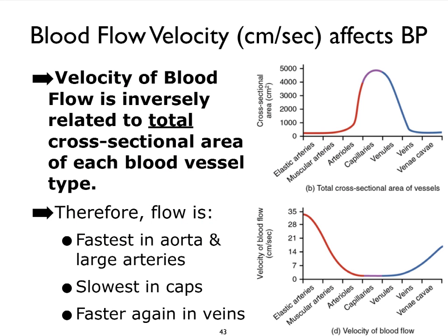Anytime we talk about velocity, we express it in distance per time unit, like you drive 60 miles an hour, for instance. We use analogous units when we describe the velocity of blood flow — typically we express it in centimeters per second: how far does the blood travel per second? Because blood flow velocity is also going to impact blood pressure. What we first need to focus on is what will essentially create a difference in blood flow velocity depending on where we are in the circulatory system.